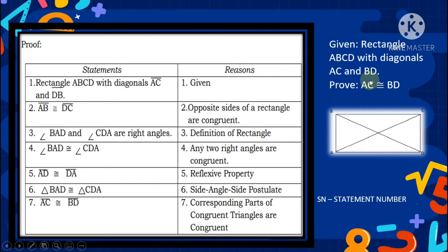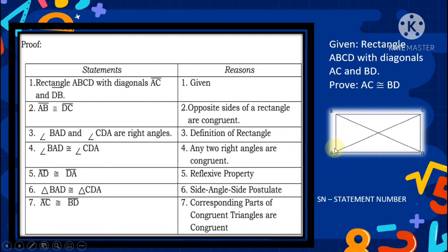Statement 1: rectangle ABCD with diagonals AC and BD — Given. Statement 2: side AB and side DC are congruent — opposite sides of a rectangle are congruent. Statement 3: angle BAD and angle CDA are right angles — definition of rectangle. Statement 4: angle BAD is congruent to angle CDA — any two right angles are congruent.